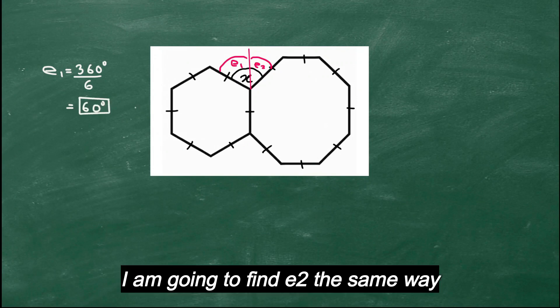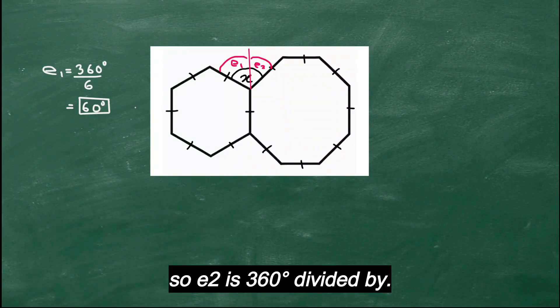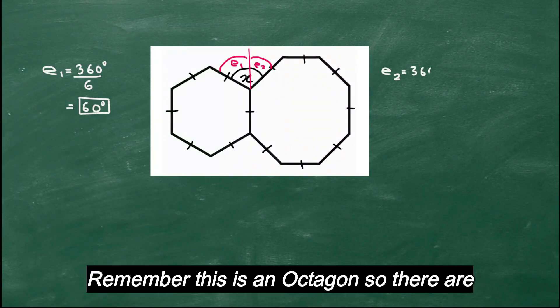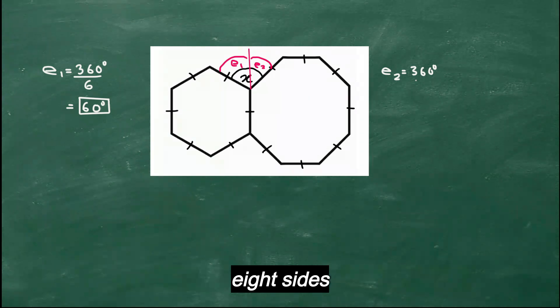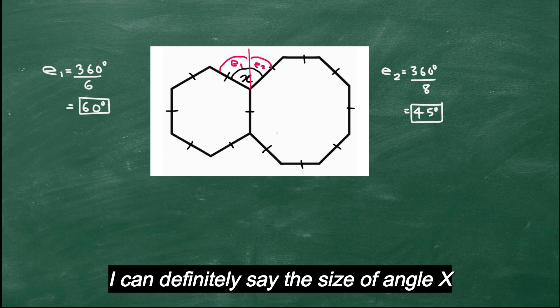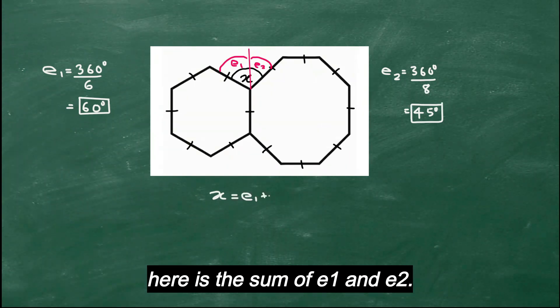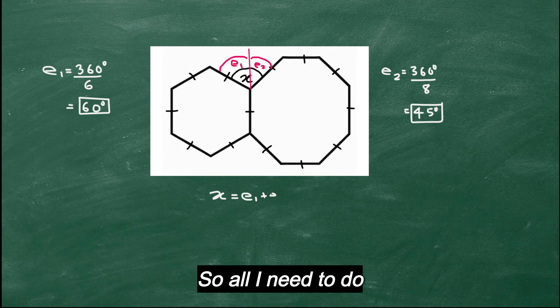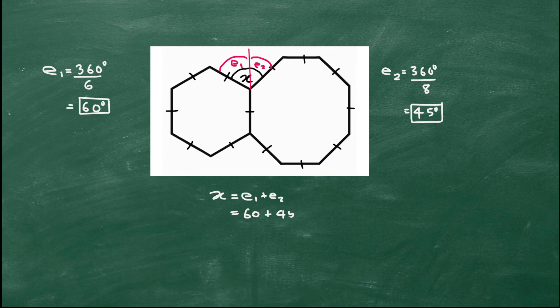I'm going to find e2 the same way. So e2 is 360 degrees divided by, remember this is an octagon, so there are eight sides, so that will be 45 degrees. I can definitely say the size of angle x here is the sum of e1 and e2, so all I need to do is 60 add 45, and my final answer is 105 degrees.